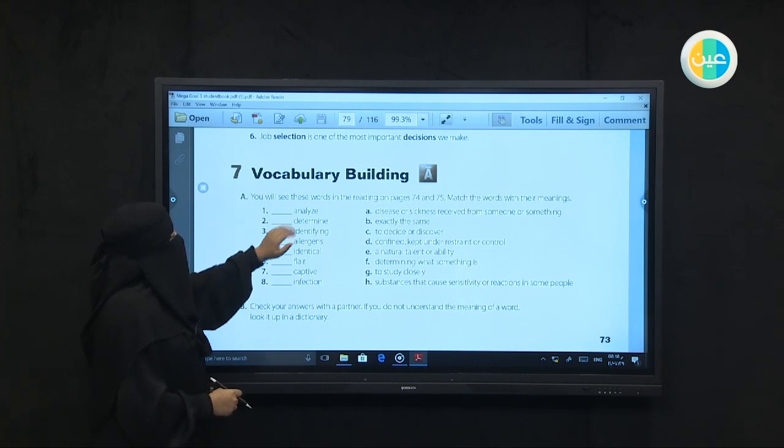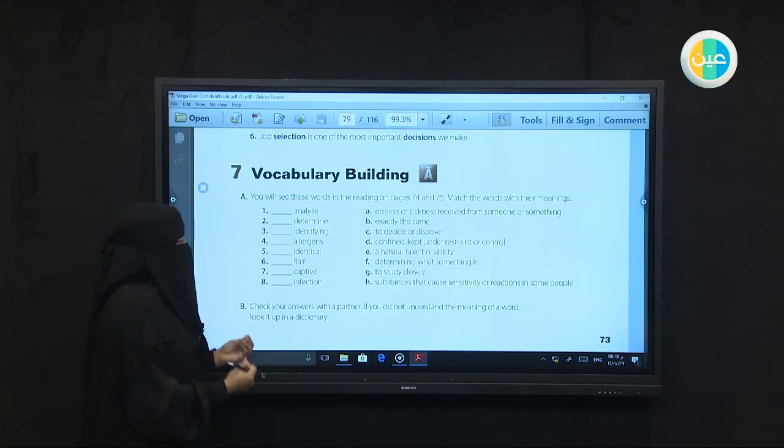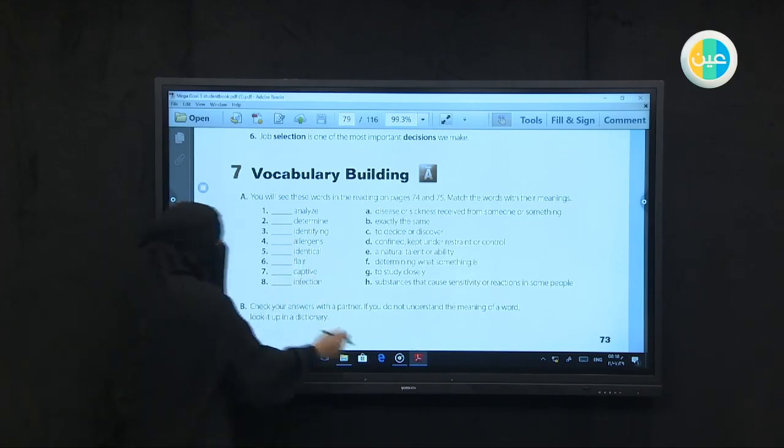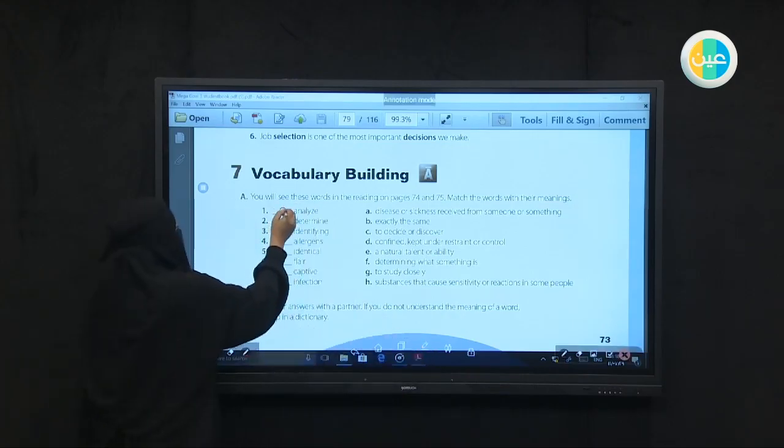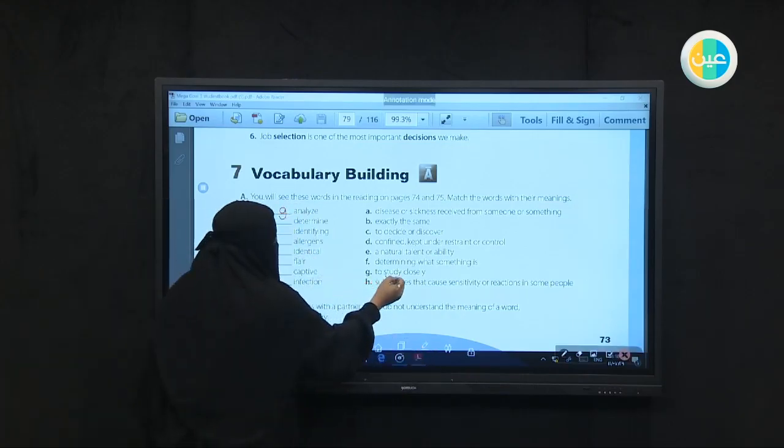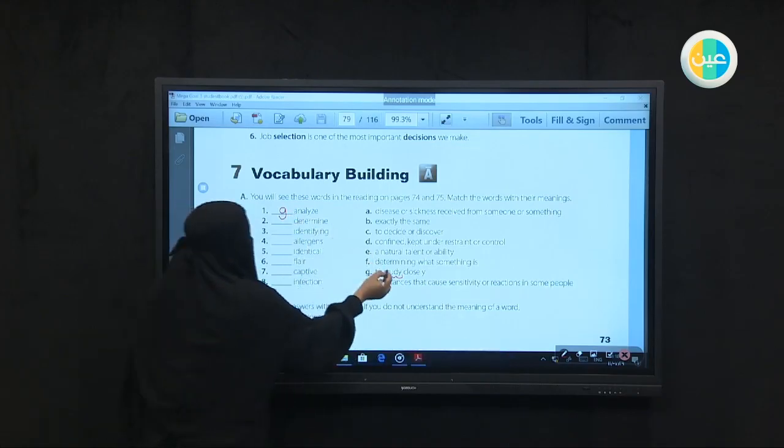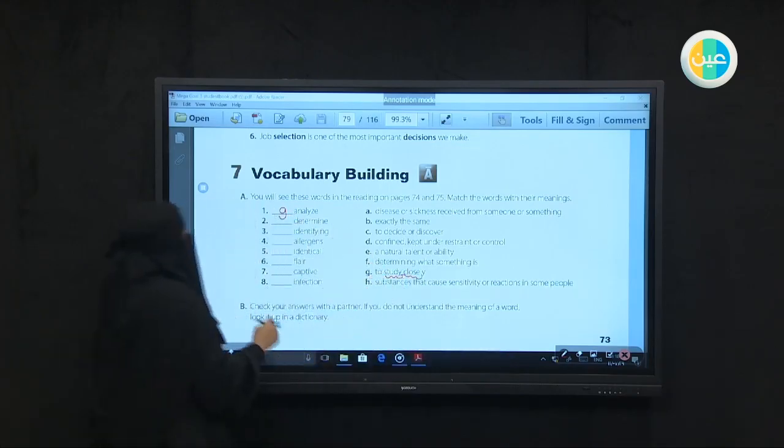Now, analyze. Analyze is the verb from analysis. It means when someone analyzes something and studies it deeply. So your answer here will be G - to study closely. Number 2, determine - when someone decides and determines something. So you'll have number C, which you can connect with decide or discover.